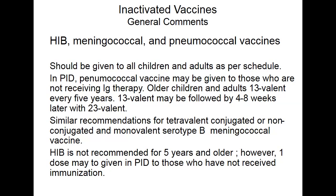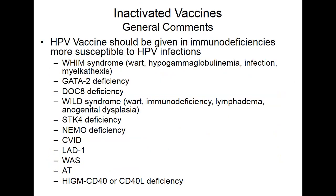Similar recommendations apply for meningococcal vaccine. Hib is not recommended for those five years and older; however, if required, one dose may be given to those who have not received prior immunization. The HPV vaccine is very important and should be given in immunodeficiency conditions with increased risk for viral infections. These patients all have a very high frequency of warts and HPV infections, so HPV vaccine should be given in immunodeficiency patients susceptible to viral infection.